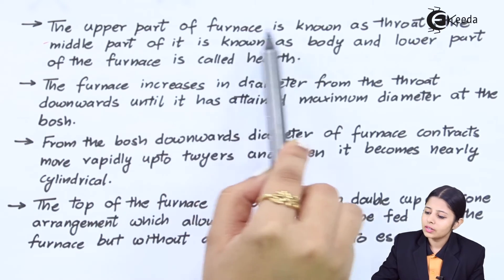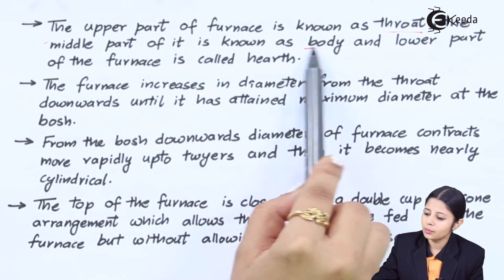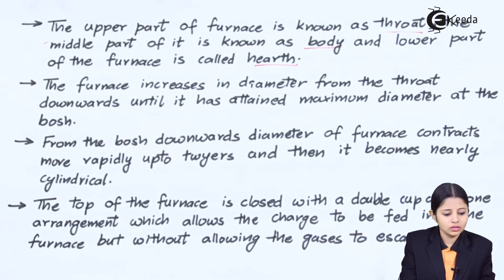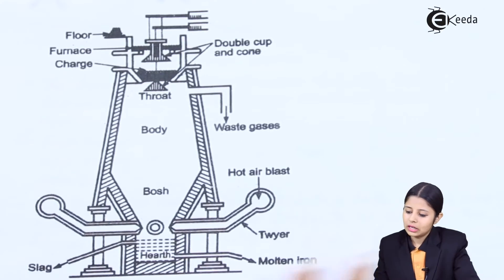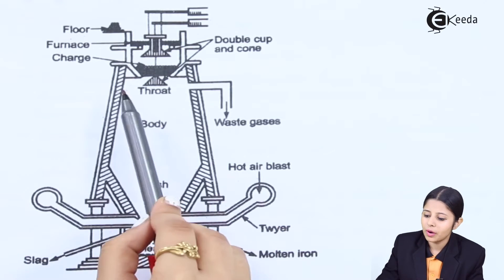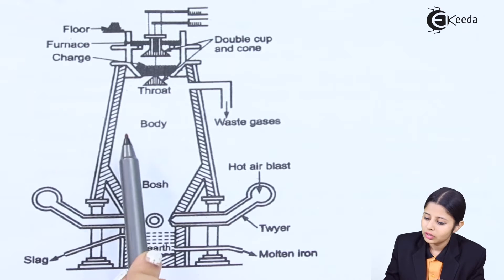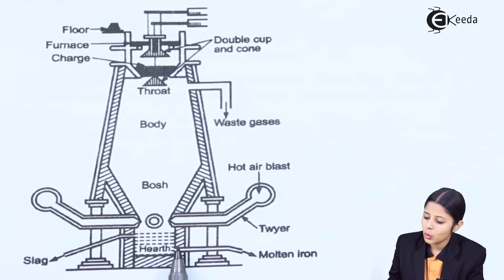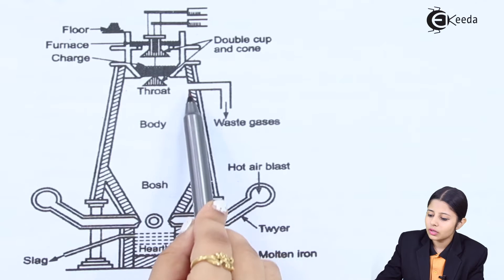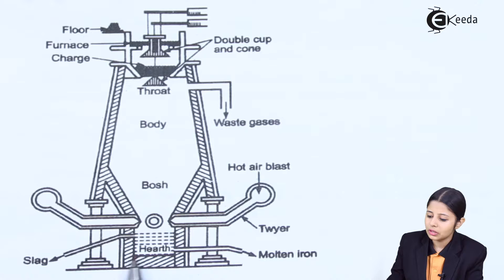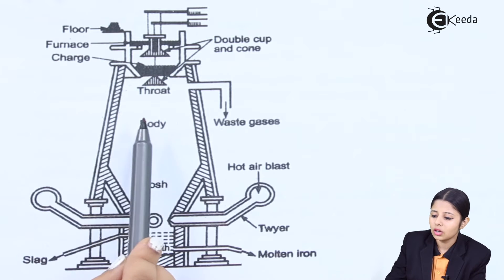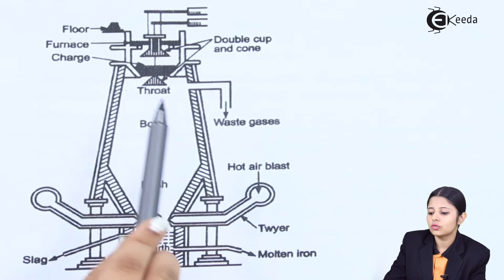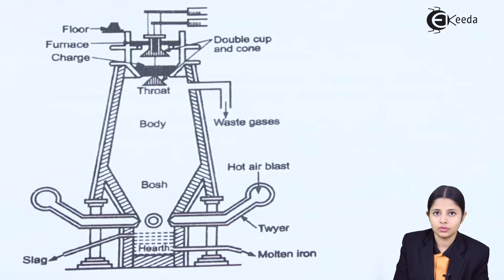The upper part of the furnace is known as the throat. The middle part is known as the body, and the lower part is known as the hearth. The entire blast furnace is lined with refractory material so that heat cannot escape, and the furnace is protected from expansion and contraction due to the various temperature changes happening inside.